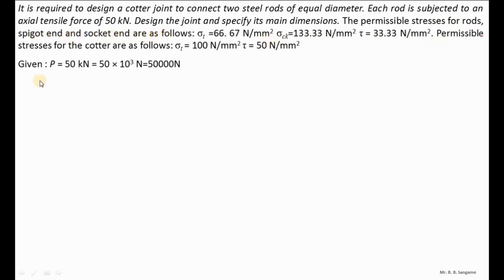The permissible stresses for the cotter are: permissible stress in tension sigma_T = 100 N/mm², and permissible stress in shear = 50 N/mm². The applied axial tensile force is 50,000 N on the cotter joint.